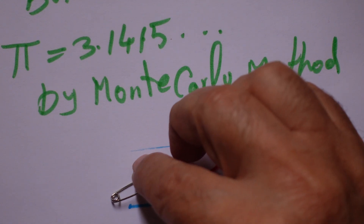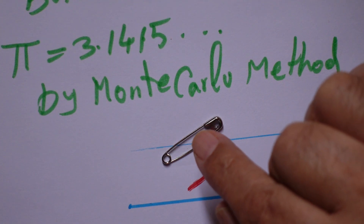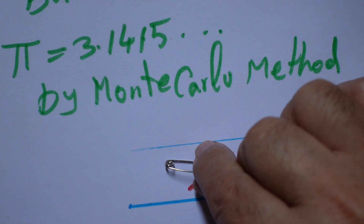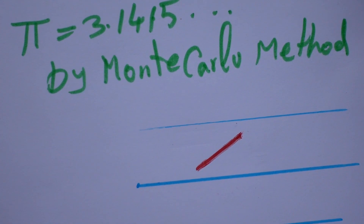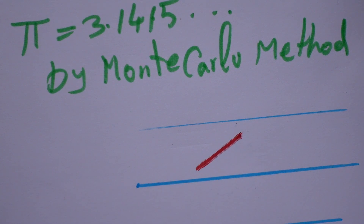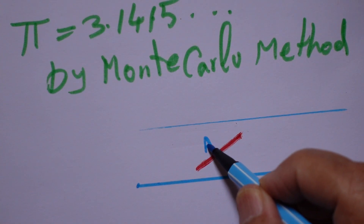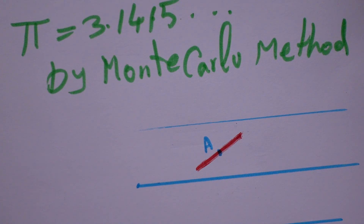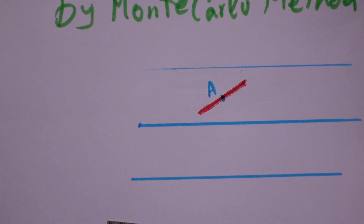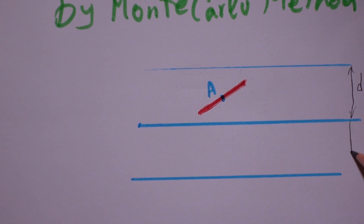Suppose we have a small needle. If it crosses the parallel lines or not — what is the probability of crossing or not crossing? Let's define point A as the middle of the needle, and let's say the parallel lines are equally spaced with distance d.